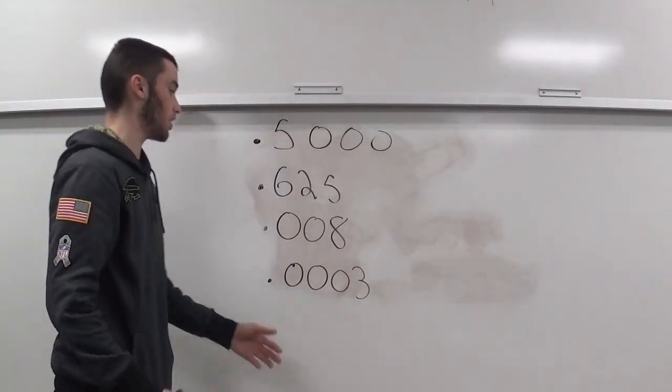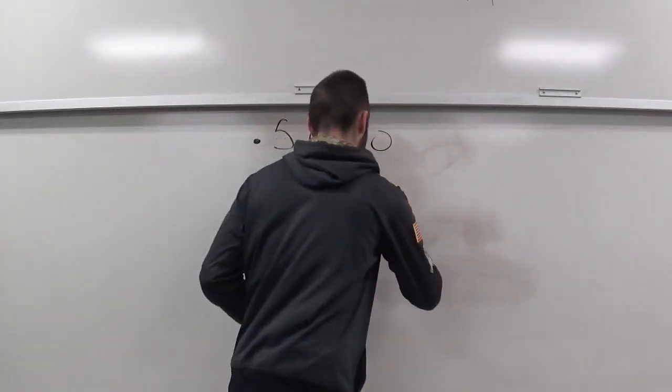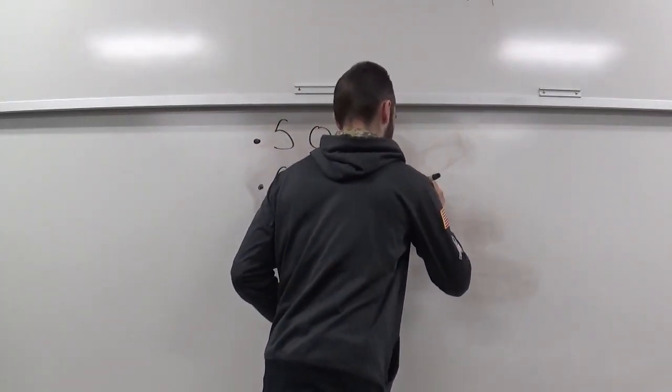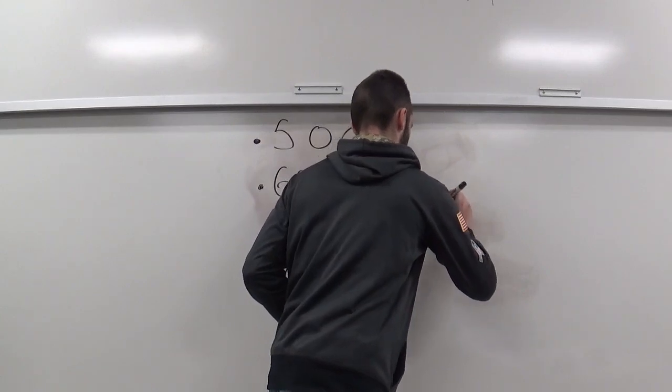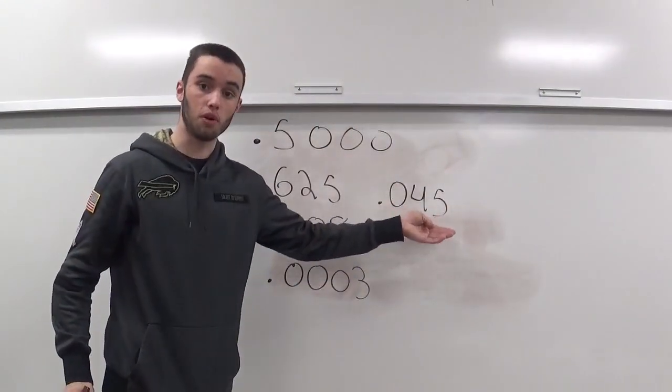If you wanted forty-five thousandths, that's what forty-five thousandths would look like, .045.